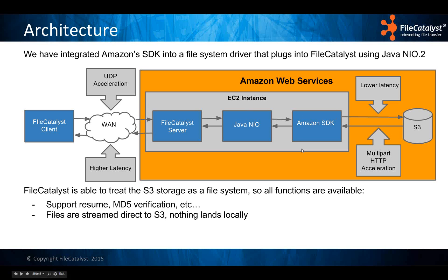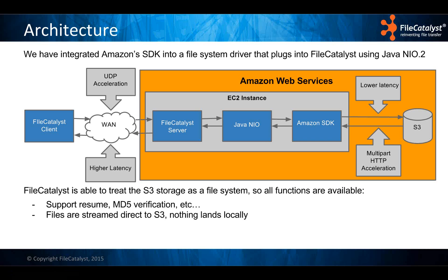The way we integrated it was to wrap the Amazon SDK — which gives us the multi-part functionality — into something called Java NIO. We're a Java-based application, and NIO essentially allows you to create a file system driver. That lets us transparently plug it into our FileCatalyst applications with very little impact on our code. We can access anything underneath Java NIO as if it's a regular file system, without worrying about all the ins and outs of dealing with an object store like S3. All file operations are now available to us, and writes are translated into a multi-part HTTP operation that goes to S3.